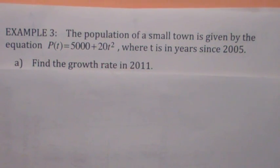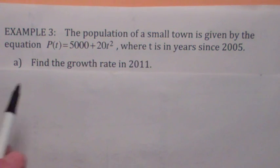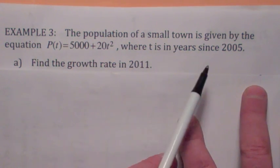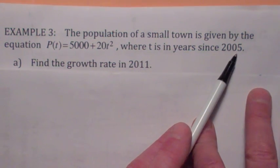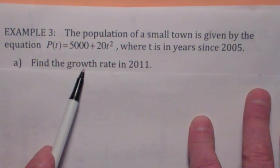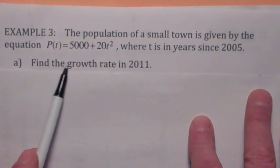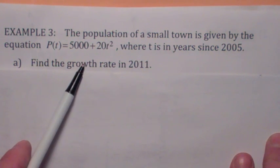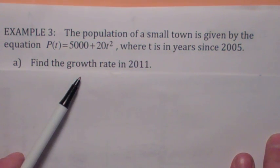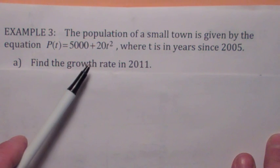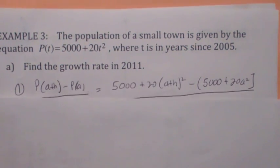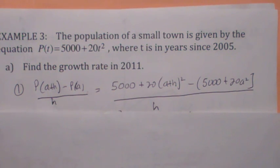Anyway, let's look at another example. Here, we are given that the population of a small town is given by this function here, and where t is the year since 2005. So it's helpful to think of 2005 as t equals zero. And so when you want to find the growth rate in 2011, that means you want to find the growth rate at t equals six. Well, the growth rate, the population growth rate, isn't that the derivative. So we want to find p prime of six. That's another way to say it, find p prime of six. I'm going to do it the same way. I'm going to first look at the difference quotient.